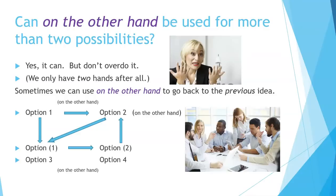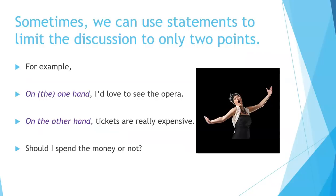Can 'on the other hand' be used for more than two possibilities? Yes, but don't overdo it — we only have two hands after all. Sometimes we start with option one, use 'on the other hand' to move to option two, then come back to option one, going back and forth. Or we can use it to move on to option three or four. We can also use 'on the one hand' to limit the discussion to two points — for example: 'On the one hand, I'd love to see the opera. On the other hand, tickets are really expensive. Should I spend the money or not?'